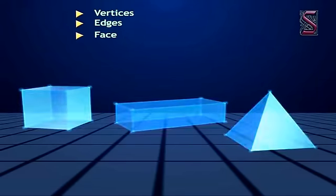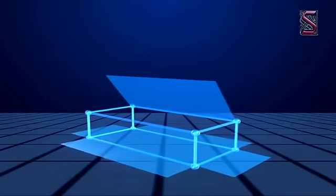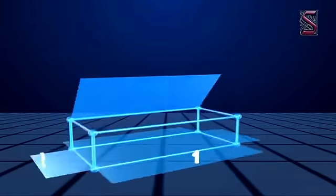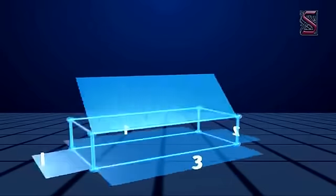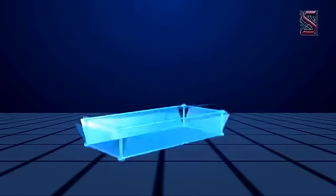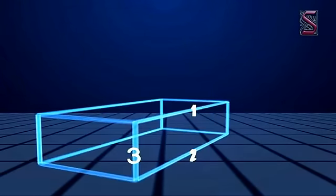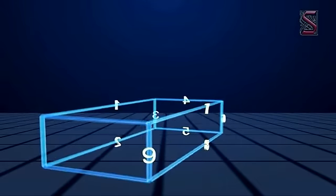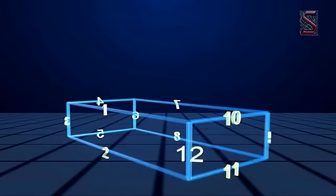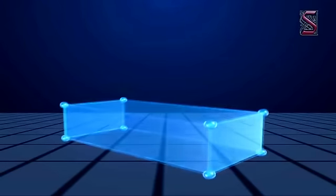A cuboid has six rectangular faces, twelve edges, and eight vertices.